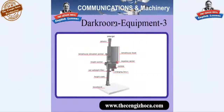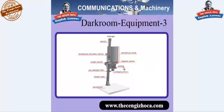Darkroom equipment three: enlarger with a column, a lamp house head, a lamp house, elevator control, a negative carrier, bellows, enlarging lens, baseboard.